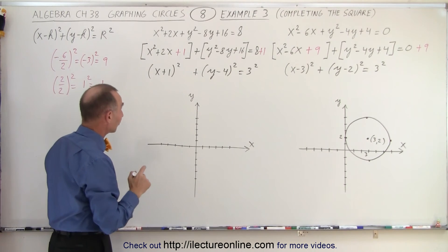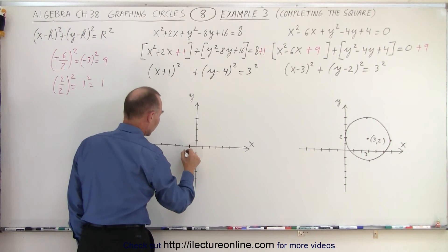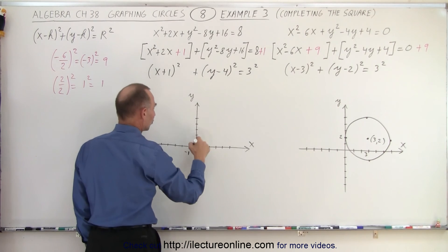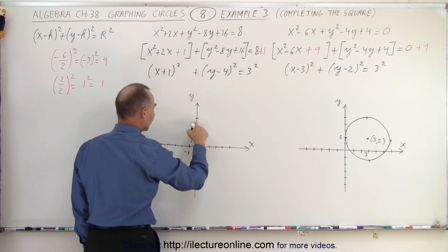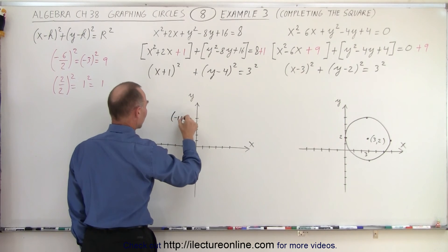So, now we can graph it by first finding the center. In the x direction, we shifted to the left by 1. So, negative 1. And in the y direction, we shifted up by 4. 1, 2, 3, 4. Right there. I'll put a 4 there. And where those two meet, right there, is the center of the circle at negative 1 comma 4.